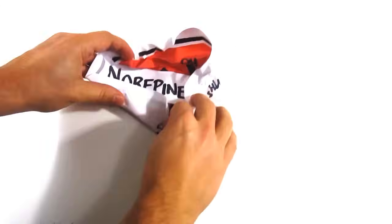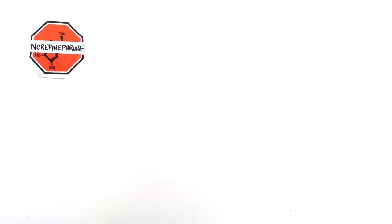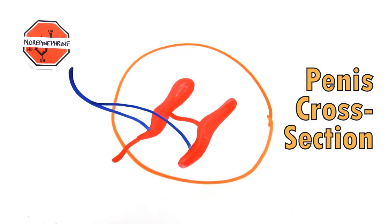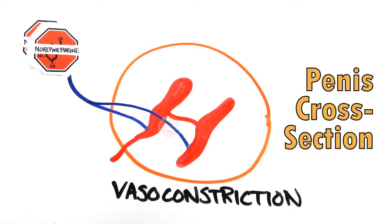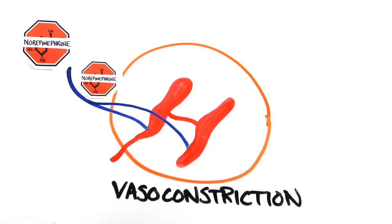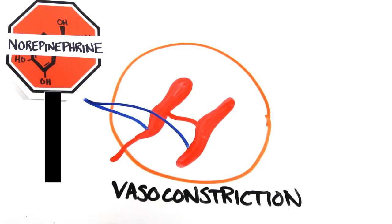One of these neurotransmitters, norepinephrine, happens to be involved in the control of erections. Specifically, it causes vasoconstriction of penis blood vessels, actively preventing an erection. It's like a stop sign to blood flow.